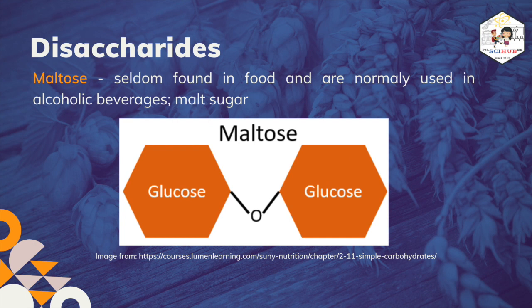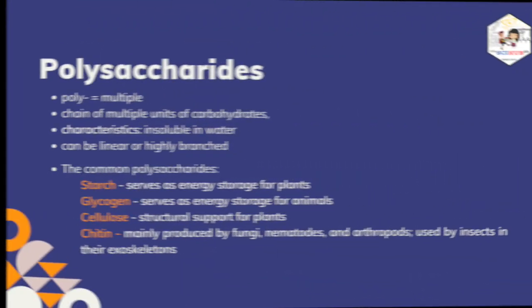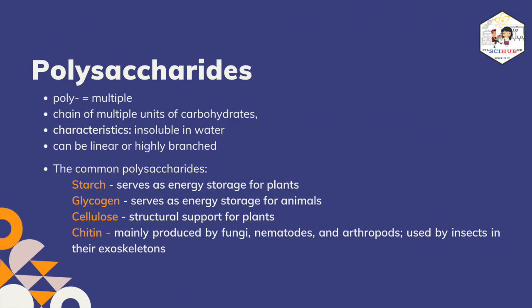Lastly, maltose. In nature, maltose is usually present in seeds and in plants as a byproduct of plants breaking down starch for energy. Maltose is usually added in the process of preparing alcoholic drinks in order to create ethanol, which gives alcohol its intoxicating characteristic. Maltose is composed of two glucose molecules.